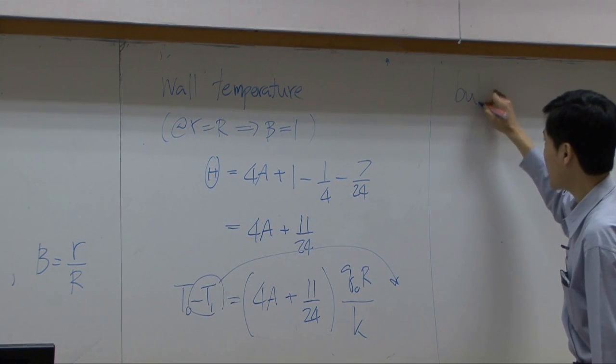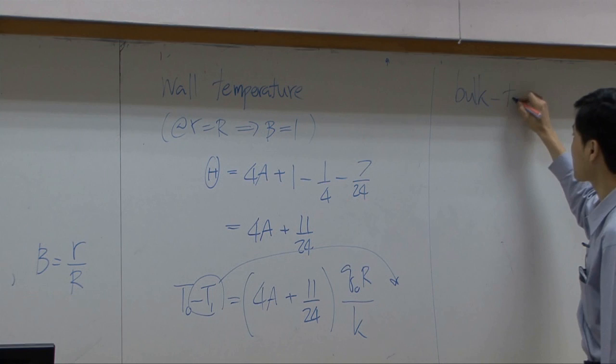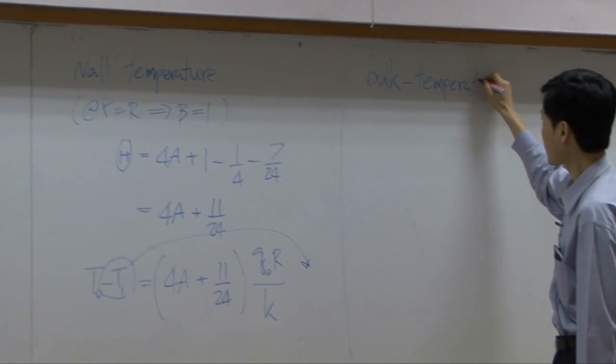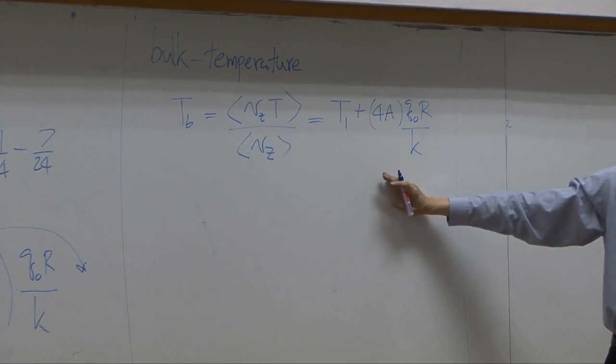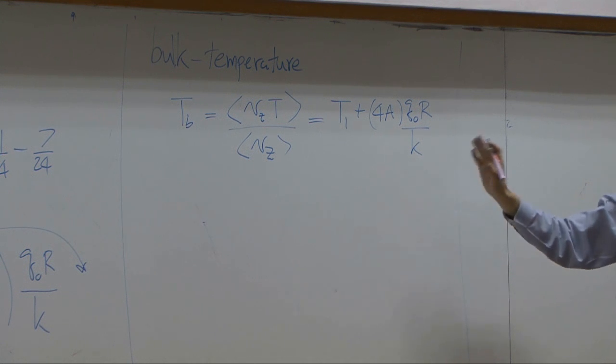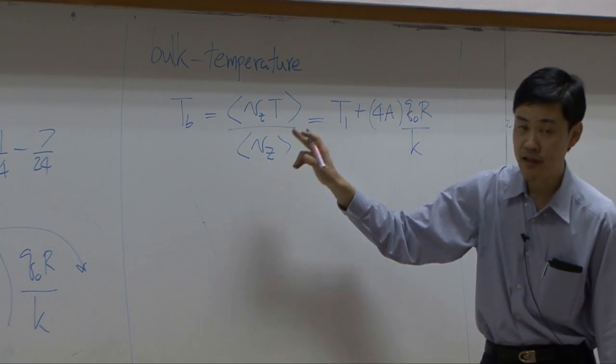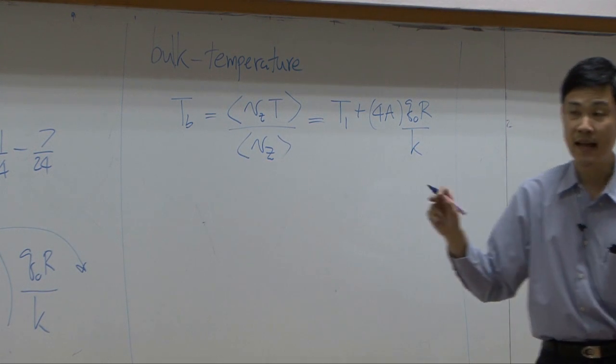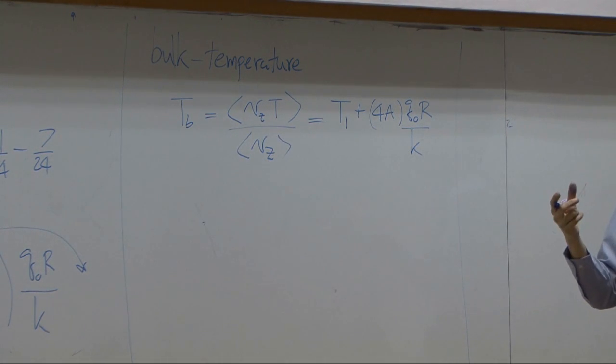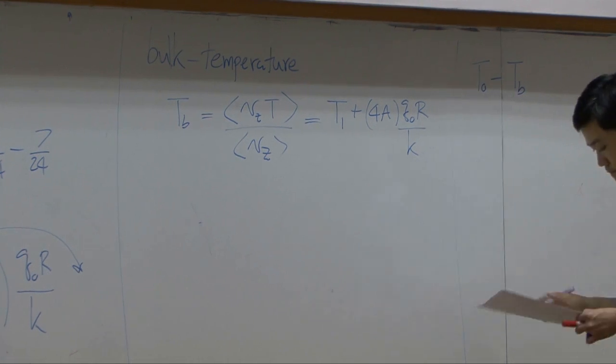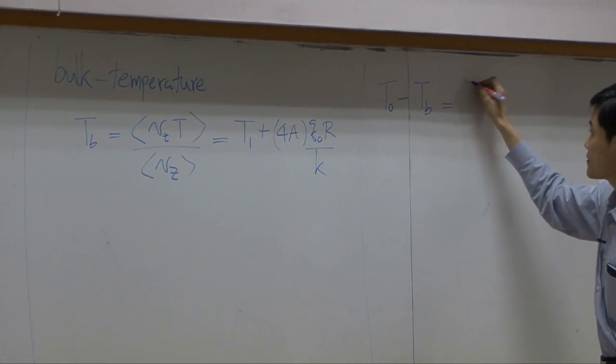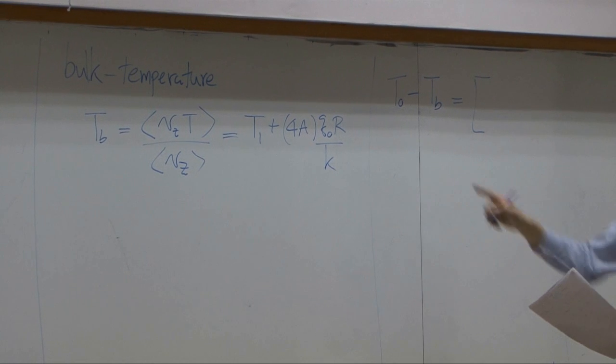Then we can calculate bulk temperature. You have wall temperature, you have fluid, average fluid temperature calculated. If you take the difference between wall temperature, T0 and TB, that will be driving force that you can plug into the Newton's Law cooling. So if I take T0 subtracted by TB, it is that part subtracted by this part.